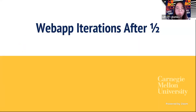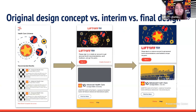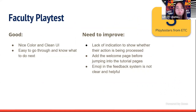Discussing how things in the web app evolved from halves to now. The initial design was separated into modules and then suited to the theme. After halves, three faculty members tested the halves version in an internal playtest. They found it had nice color and clean UI and was easy to go through. However, they also mentioned confusion due to lack of indication of whether their action was being processed, and that jumping directly to the tutorial was not attractive — emojis should also be clearer in the feedback system.